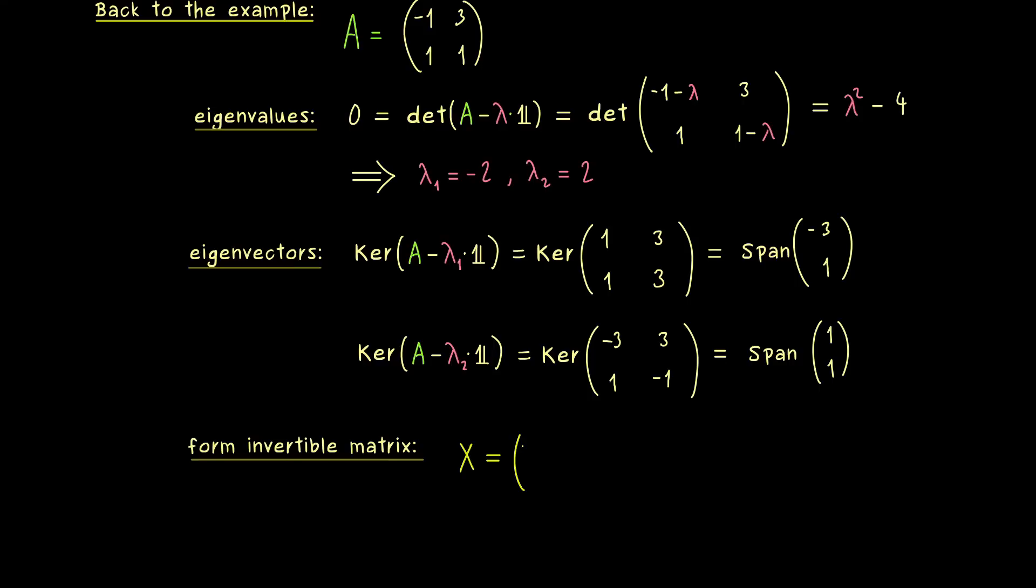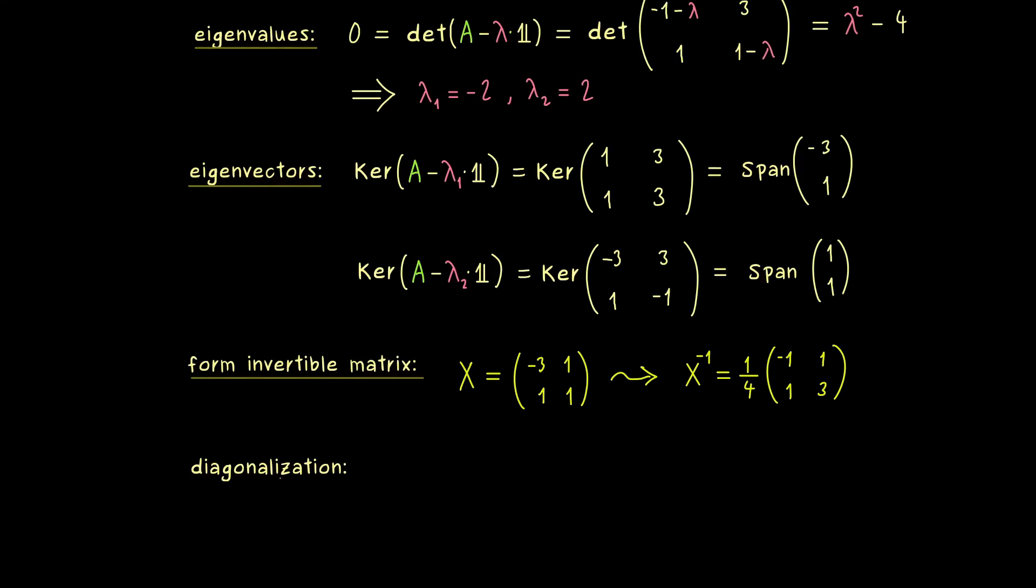So in the next step, let's write down this important invertible matrix. And this is quite simple because we just put the two eigenvectors we have in the columns of the matrix. And moreover, we can also immediately calculate the inverse of this matrix X as well. For a 2x2 matrix, this is quite simple: this is one quarter times minus 1, 1, 1 and 3. If you don't believe it, you can just calculate the matrix product to justify that this is the inverse of X. And with that, the whole process of diagonalization is done because we have found our matrix X and the diagonal matrix D. Indeed, we already know this nice formula, and that D has the eigenvalues on the diagonal. In this case, first minus 2 and then plus 2.